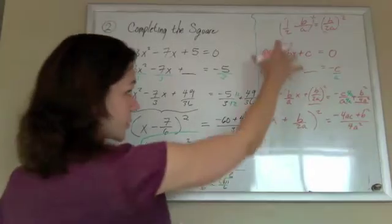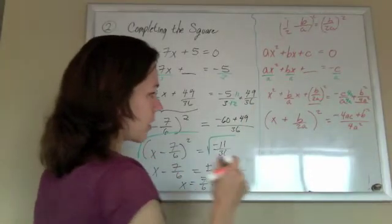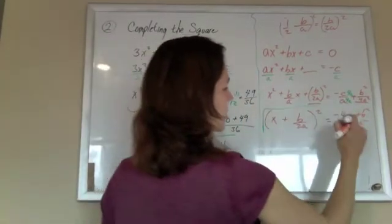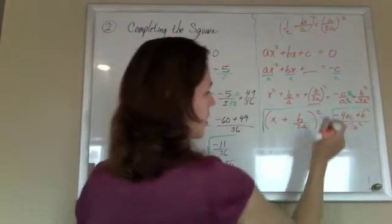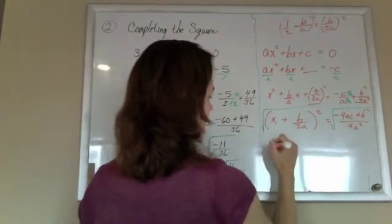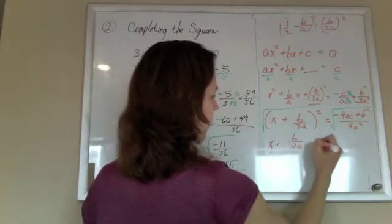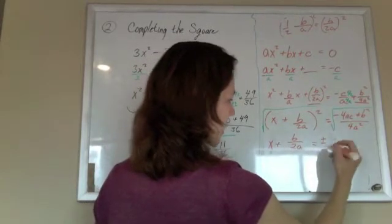And I've done all this work to get that perfect square so that I can take the square root of both sides, and I get x plus b over 2a equals plus or minus...